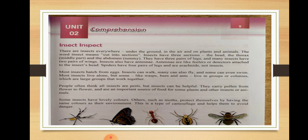Insects can walk, many can also fly, and some can even swim. Most insects live alone, but some insects live in colonies — they live in groups and work together. Examples of insects that live in colonies are wasps, bees, and ants.